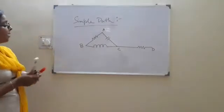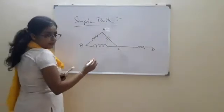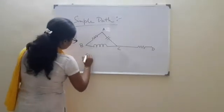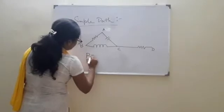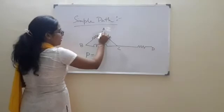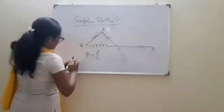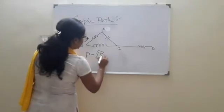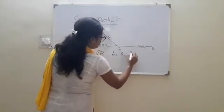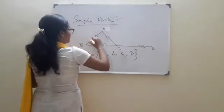So, here a simple path will be, if the simple path is denoted by P, simple path will be B to A to C to D. That means B, A, C, D. That is, this is a simple path.